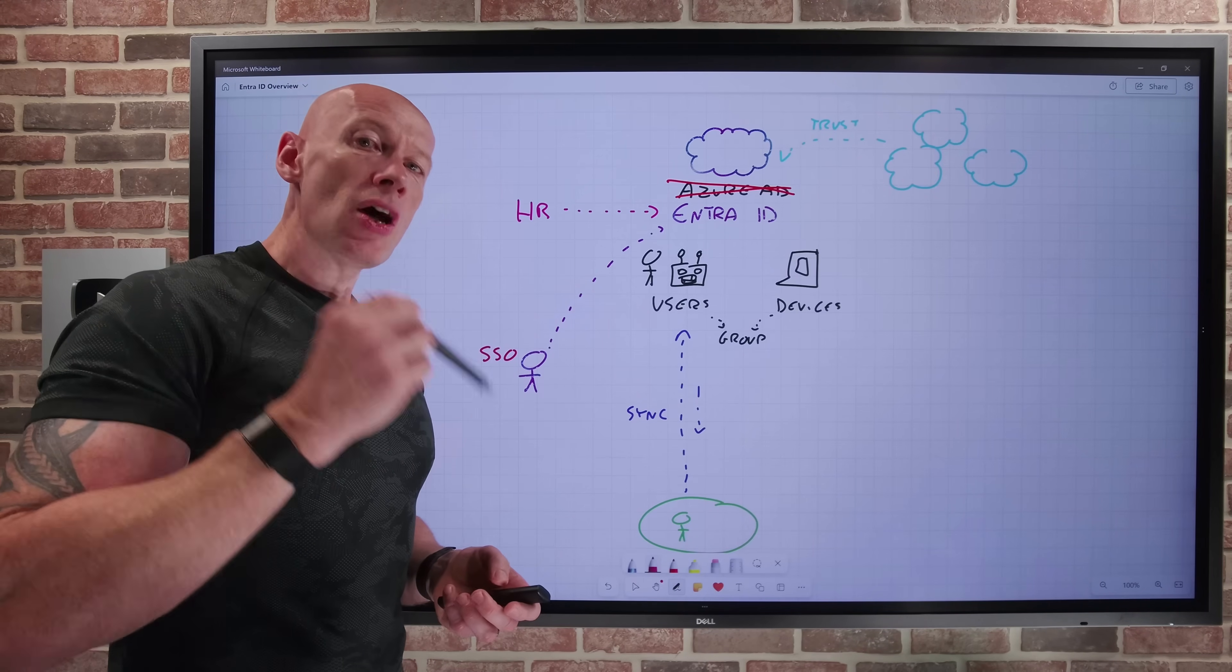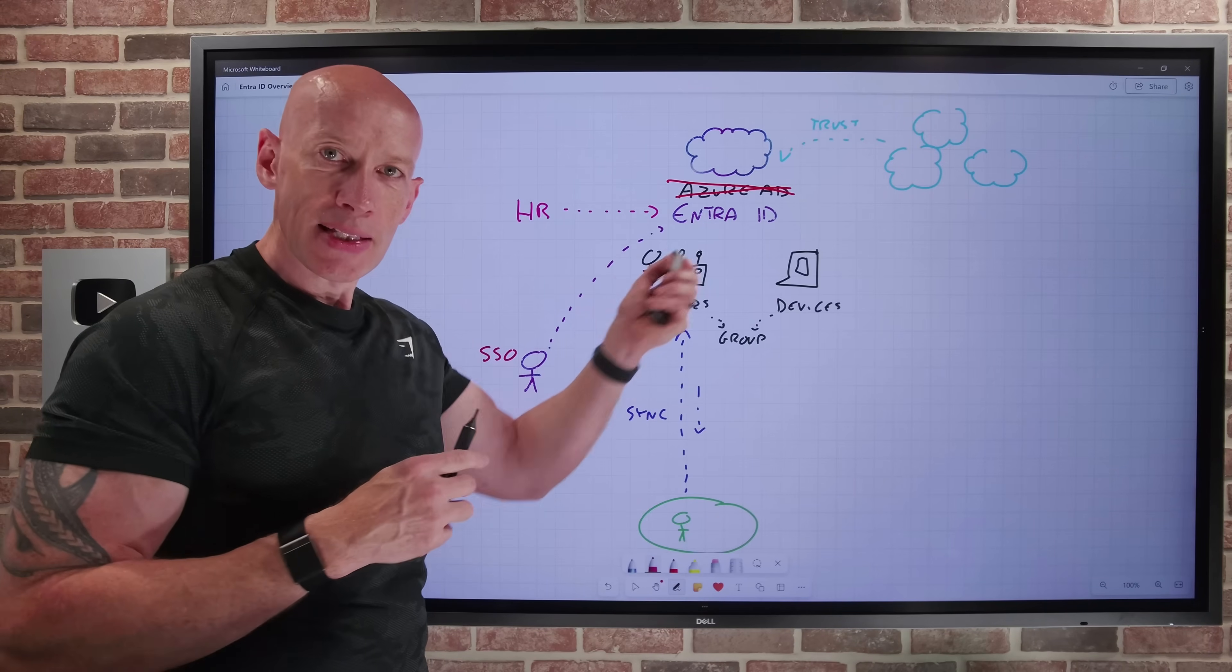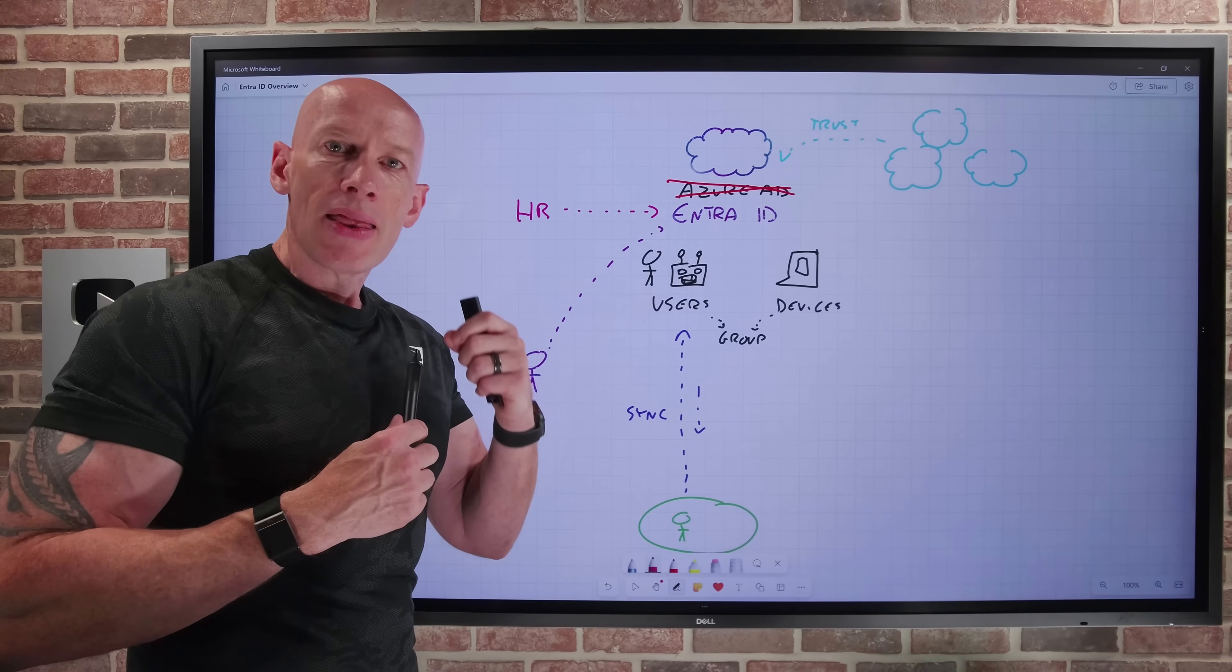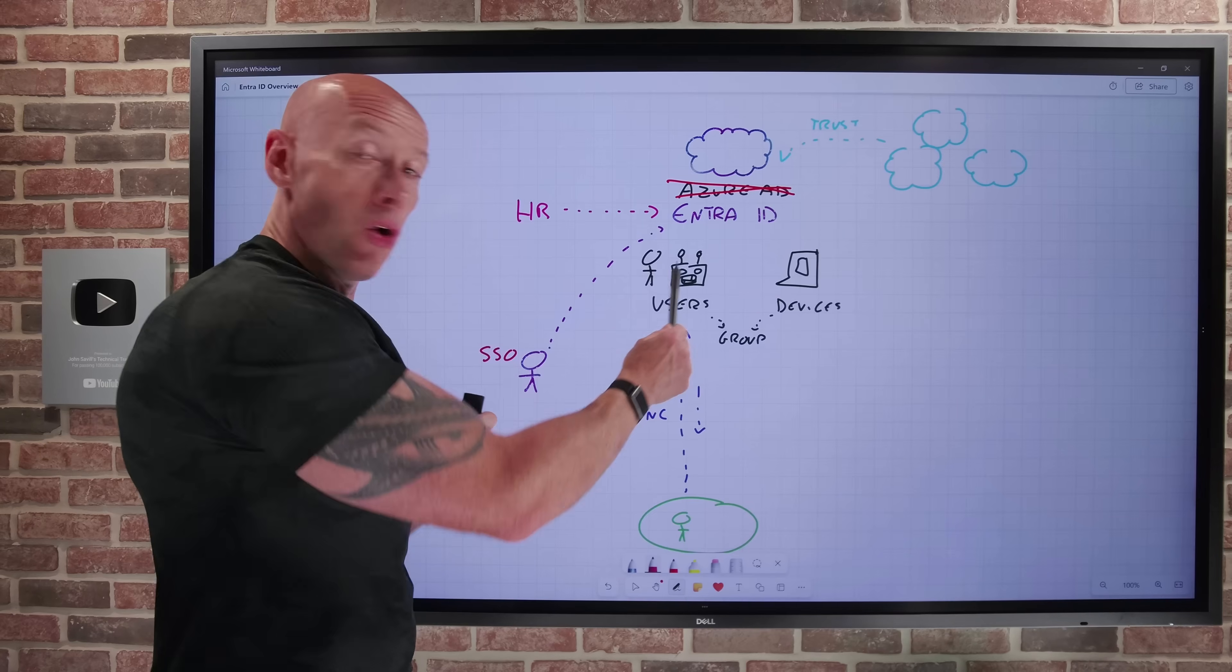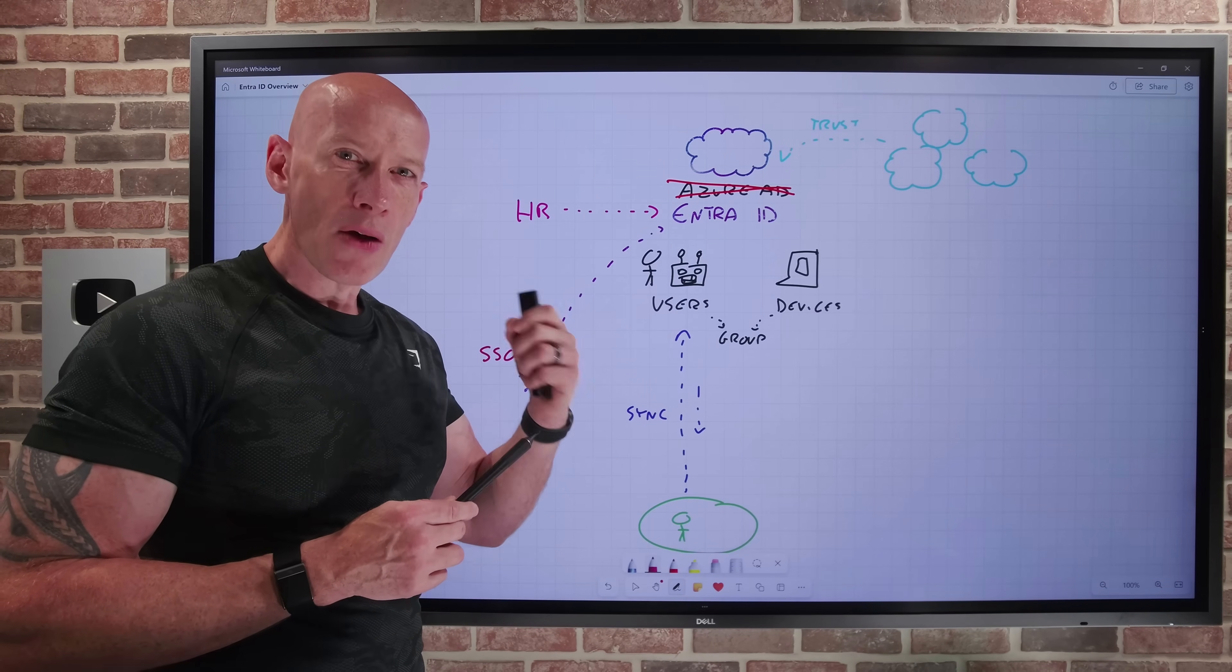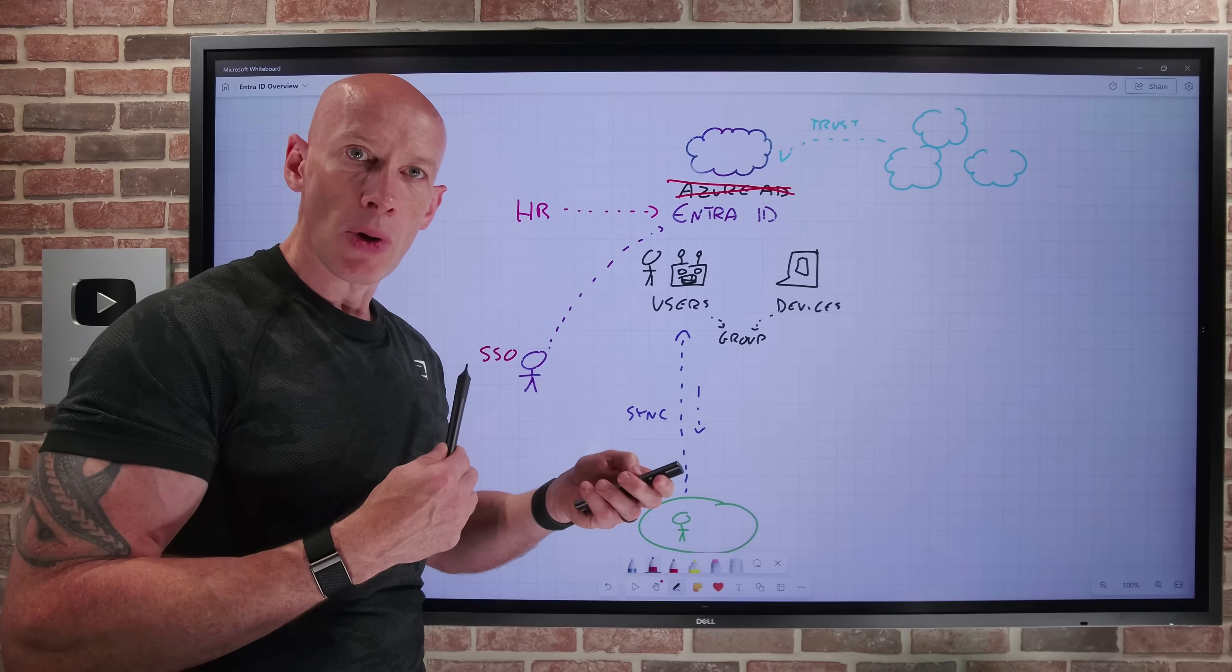As services are moving outside of your network, the identity becomes that critical security perimeter. Therefore, Entra has a lot of capabilities to help ensure the human or non-human really are who they say they are. That's the authentication, the proving you are who you say you are.